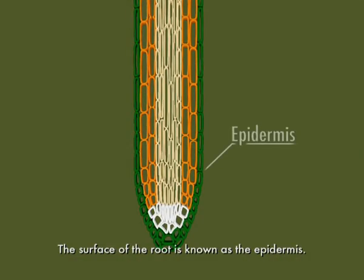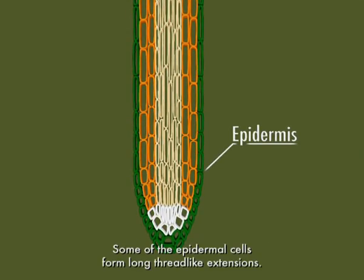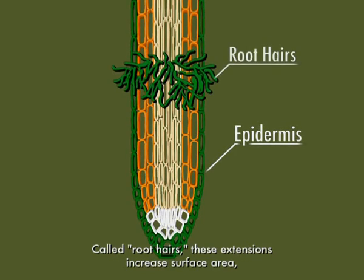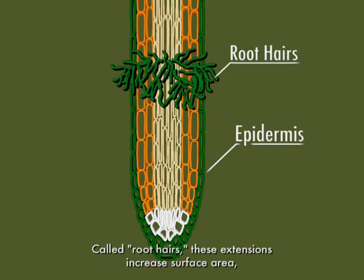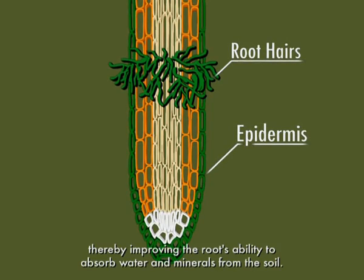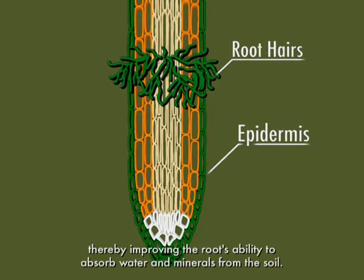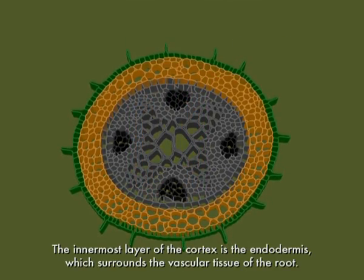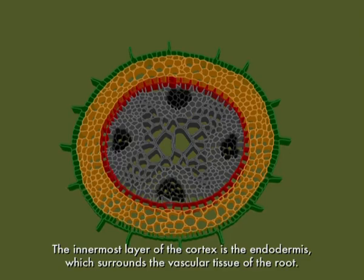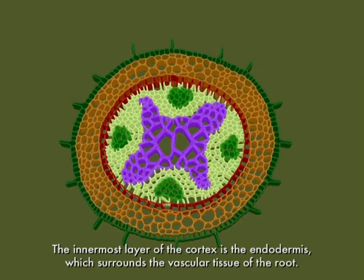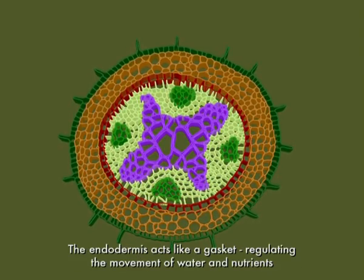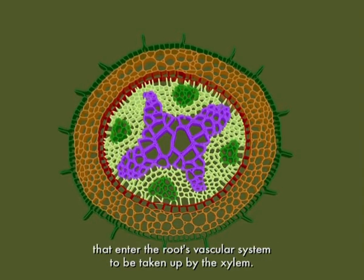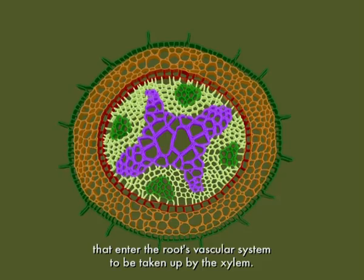The surface of the root is known as the epidermis. Some of the epidermal cells form long thread-like extensions called root hairs. These extensions increase surface area, thereby improving the roots' ability to absorb water and minerals from the soil. Just inside the roots' epidermis is the cortex. The innermost layer of the cortex is the endodermis, which surrounds the vascular tissue of the root. The endodermis acts like a gasket, regulating the movement of water and nutrients that enter the root's vascular system to be taken up by the xylem.